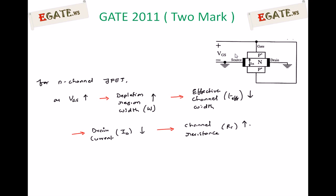In contrast, for BJT amplifiers, the emitter-base junction is always forward biased. Under forward bias, the effective resistance is very small, so we don't achieve the ideal input resistance. For a JFET, the ideal input resistance can be achieved by keeping the PN junction across gate-source reverse biased, making the input junction reverse biased.